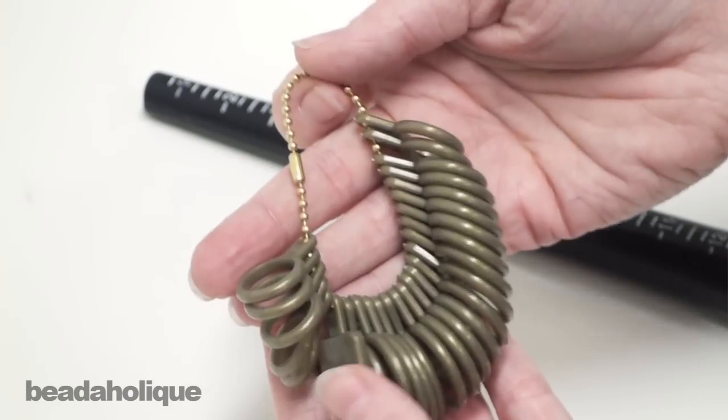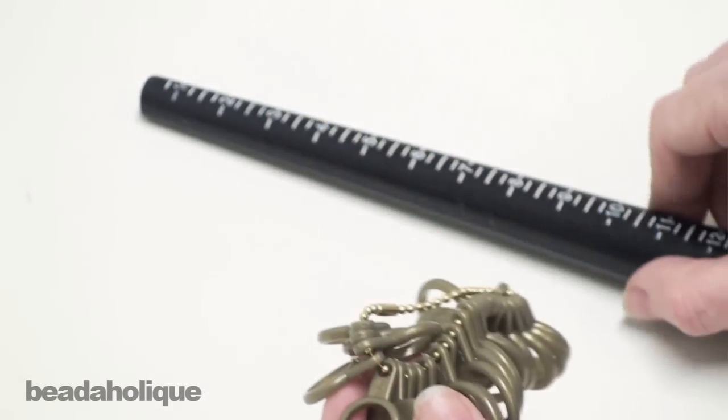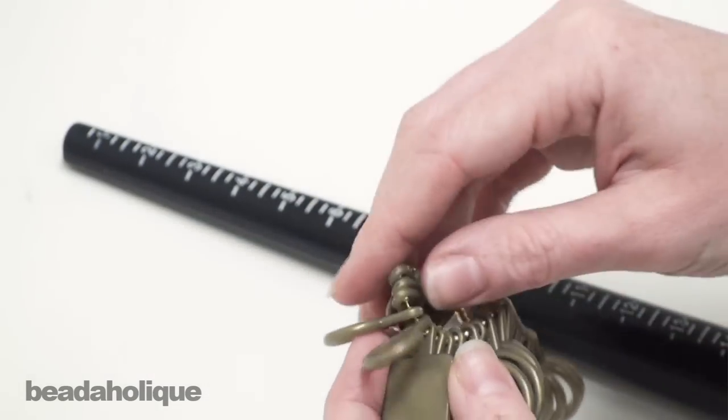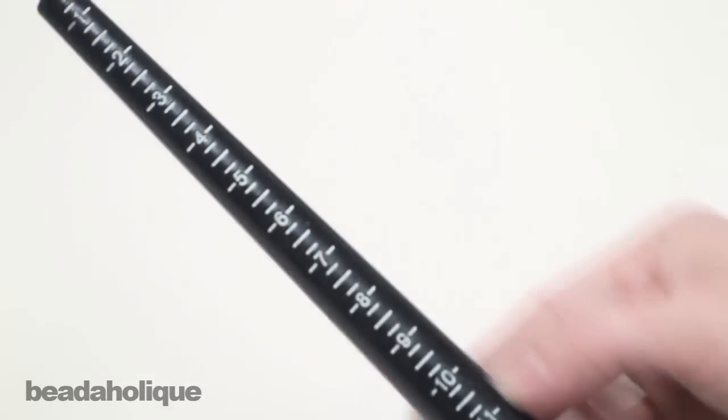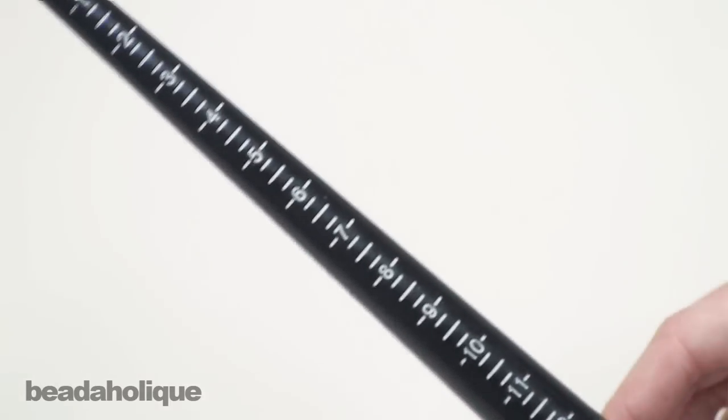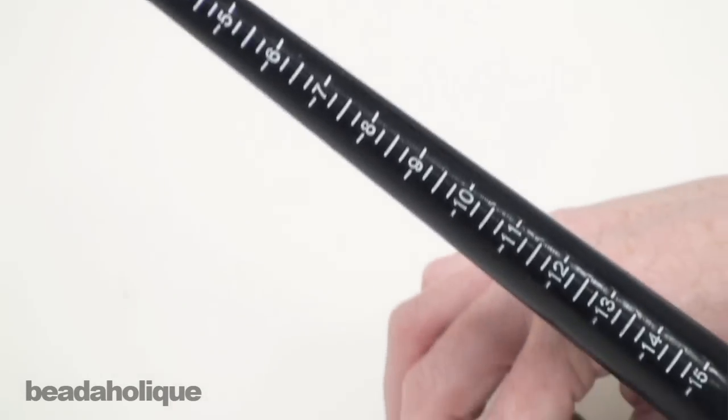So once you know the size of your ring you can go ahead and use a ring mandrel to make a ring from scratch. So if you look at the ring mandrel you'll see it also has numbers along the edge of it. And they number from one to fifteen. And these numbers are going to correspond with the numbers on your ring sizer.